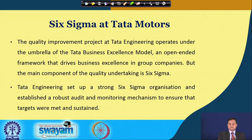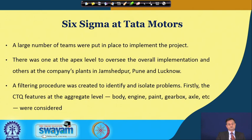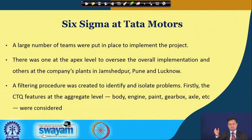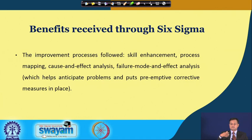Large teams were put in place: one at the apex level to oversee overall implementation, and others at the company, shop floor, and plant levels in Jamshedpur, Pune, and Lucknow. A filtering process was created to identify and isolate problems, starting with CTQ features at aggregate levels — body, engine, paint, gearbox, axle — then subdivided into further CTQs. The improvement process followed skill enhancement, process mapping, cause-and-effect analysis, and Failure Mode and Effects Analysis (FMEA), which helped anticipate problems early and put preemptive efforts into solving them.